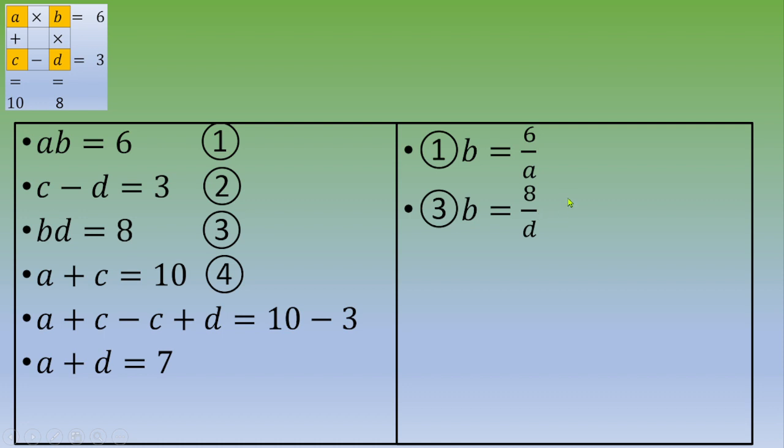Now, you got 8 over D equals 6 over A. So, 8A equals 6D. And you can simplify by 2, and you get 4A equals 3D.